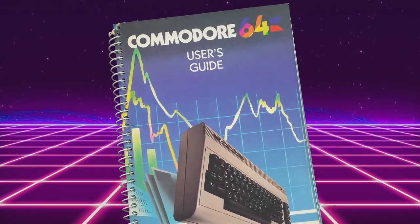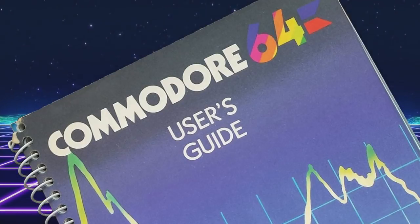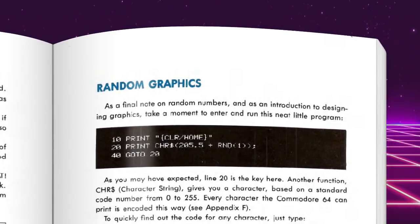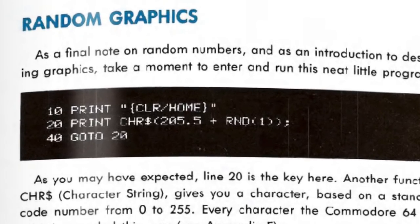The first place anyone would likely have encountered this code was in the Commodore 64's user guide, which had a small section on the BASIC programming language. On page 53 you'll find a little snippet of code — and if you're interested, you can get that user guide or the programming manual online at archive.org; I'll put a link in the episode notes. This is actually a three-line version: line 10 clears the screen, line 20 prints a character, and line 40 goes back to 20, creating an infinite loop.